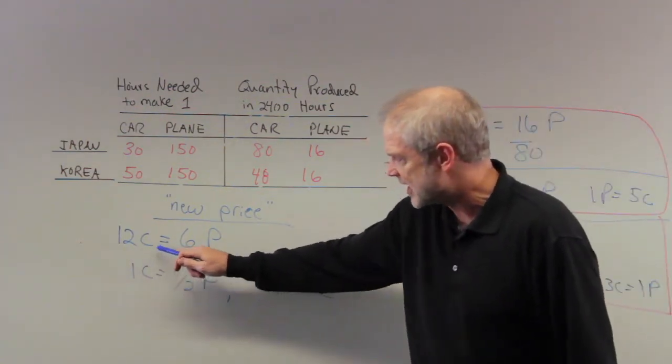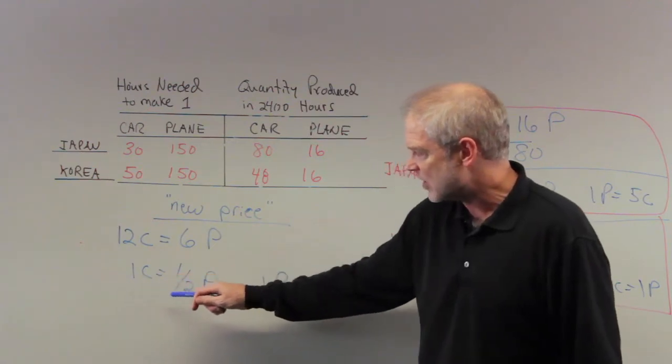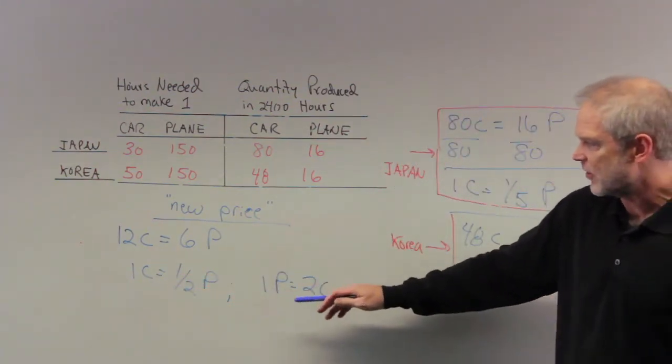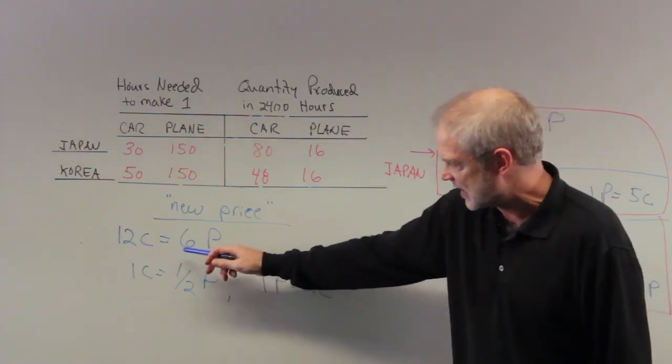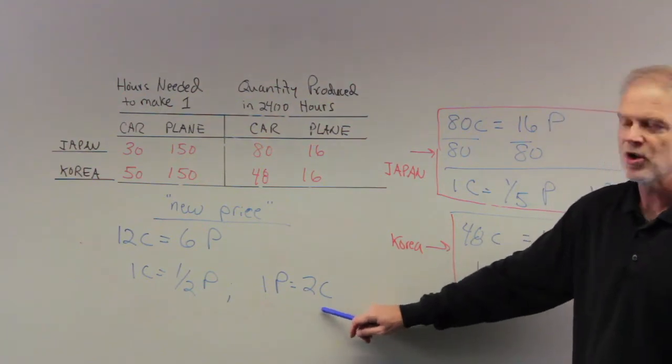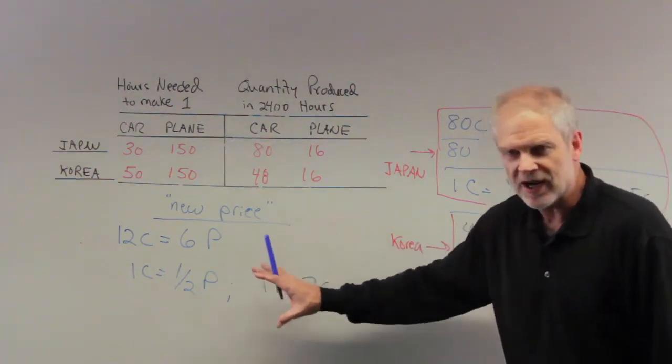Remember, I just divided both sides by 12 here. That gave me one car is equal to half a plane. And then I just take the flip of it. I can go the other way and divide both sides by six, divide this by six, divide that by six. That gives me one plane is equal to two cars. So those are the prices.